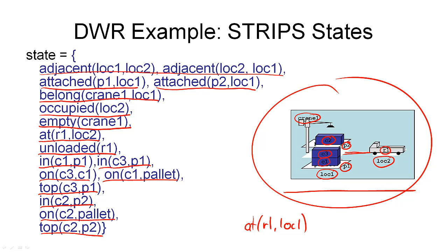Because at location one, there is not the robot R1, so this is false. It is not part of our state. It is not in that set. And the closed world assumption means it is false. So this is what a state looks like in the STRIPS representation. It is a set of ground atoms.